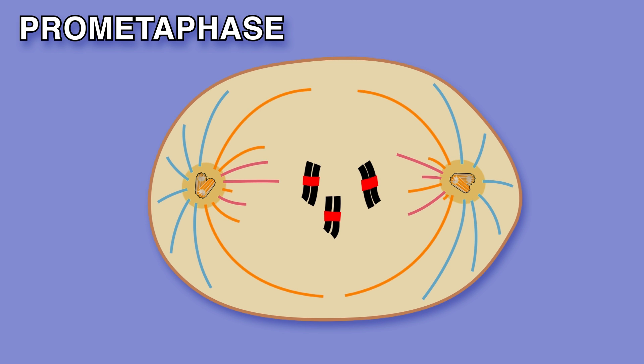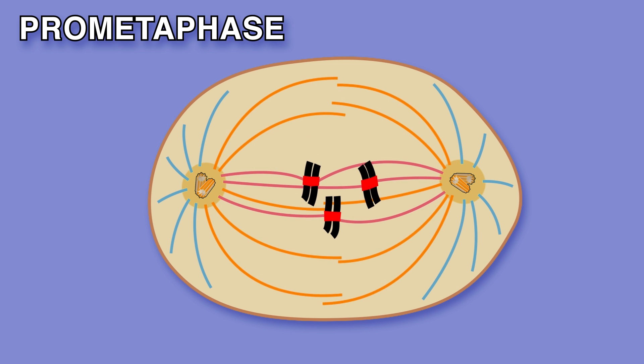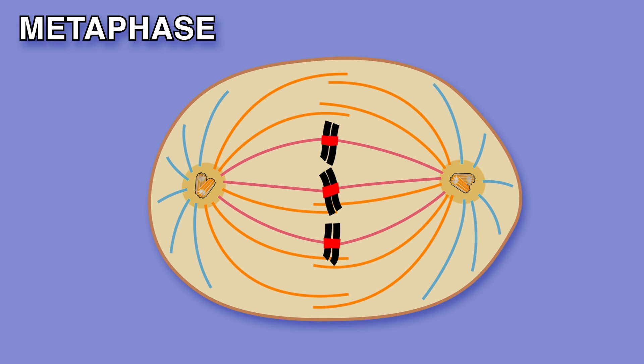The nuclear envelope breaks down at prometaphase's start. Chromosomes attach to microtubules via kinetochores and depart. During metaphase the chromosomes are aligned along the spindle's equator. End to end they are aligned thanks to microtubules to which sister chromatids latch.